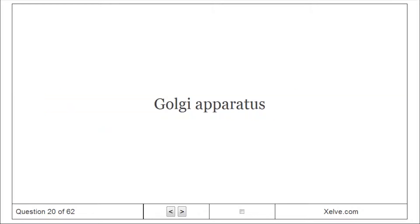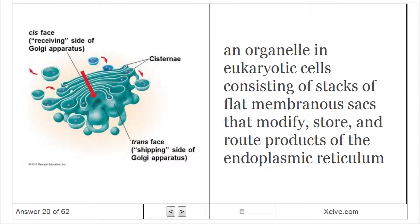Golgi Apparatus: An organelle in eukaryotic cells consisting of stacks of flat membranous sacs that modify, store, and route products of the endoplasmic reticulum.